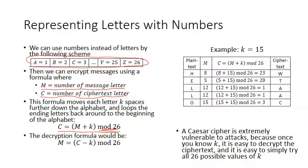That's what the mod is there for. This is our encryption formula — we add K to the message to get the ciphertext. For the decryption, you take the ciphertext and subtract K from it, and that gives you back the original message. You're still doing that mod 26.